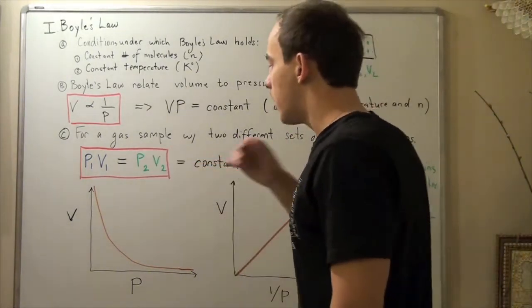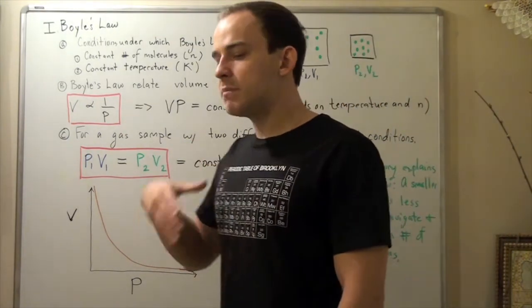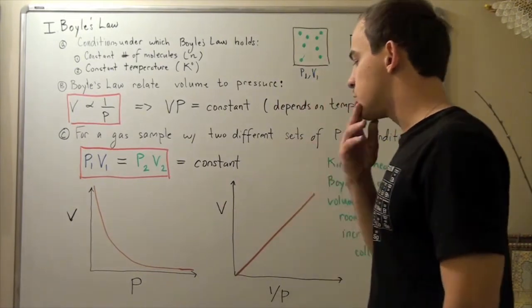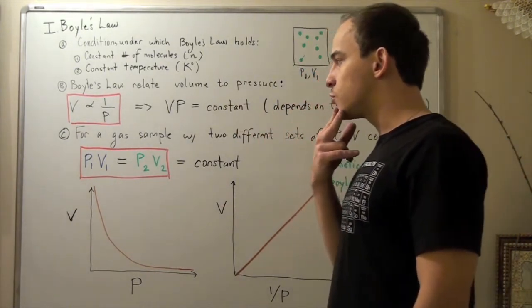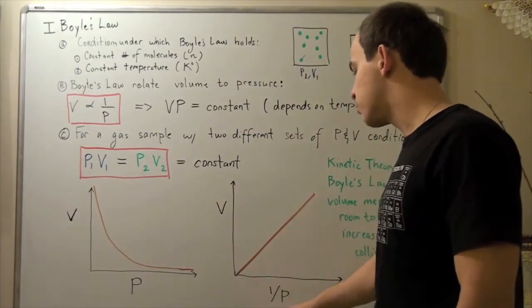So this is Boyle's law. And Boyle's law is used to explain macroscopic behavior. So let's examine the graphs of Boyle's law. Now we can have two graphs. We can graph volume and pressure or we can graph volume and one over pressure.